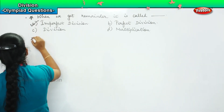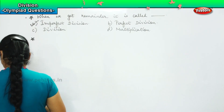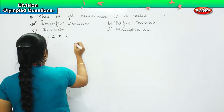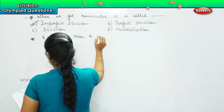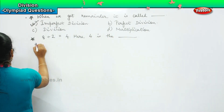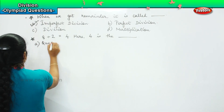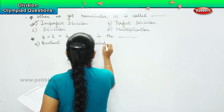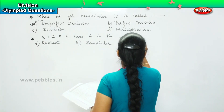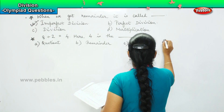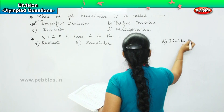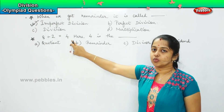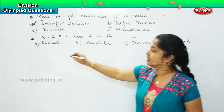Here is your next question. The question says: 8 divided by 2 is equal to 4. Here, 4 is the dash. The options are: quotient, reminder, divisor, and dividend. So, 8 divided by 2 equals 4 — this is the answer obtained after division. So, what is the answer called? Very good. So, 4 is the quotient here.